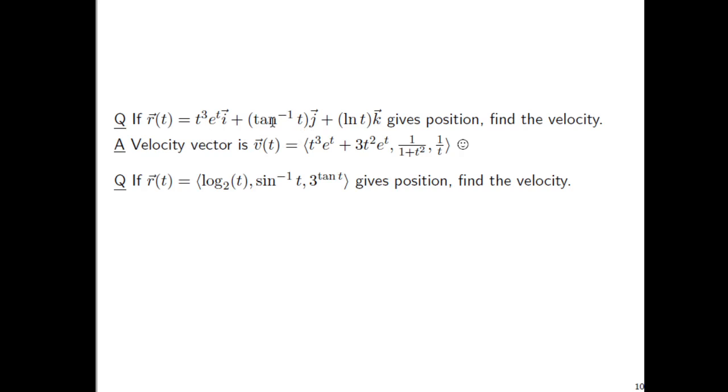For the second term, the derivative of arc tangent is 1 over 1 plus t squared. Typically, we think of this a lot in going backwards, right? When you anti-differentiate 1 over 1 plus t squared, you get the arc tangent function. And then ln of t differentiates to 1 over t. So, it was just an excuse to practice some of this stuff.